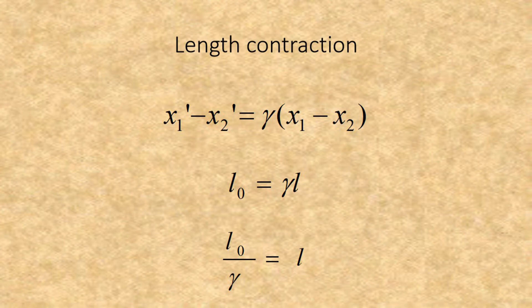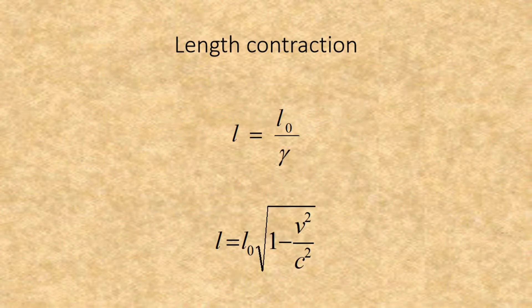Substituting L0 and L, we get L0 equals gamma times L, which becomes L0 over gamma equals L. This results in L equals L0 over gamma, or L equals L0 times the square root of 1 minus v squared over c squared. This is, of course, the standard length contraction formula.